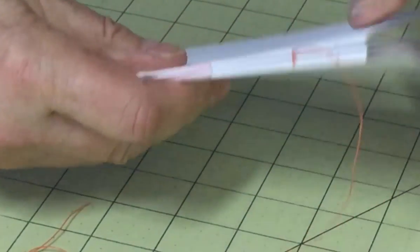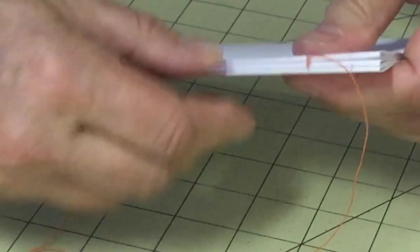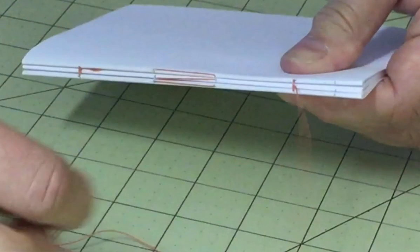That's the kettle stitch. You will do this same stitch at the end of every signature, linking the new signature to the rest of the text block.